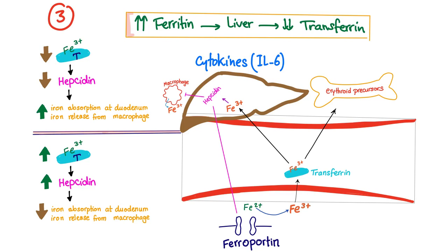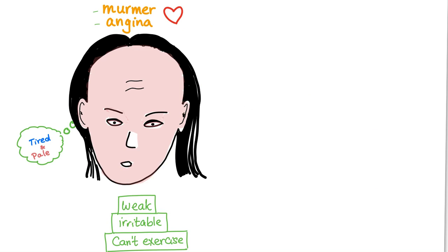That's why we have told you that ferritin and transferrin are always in inverse relation to each other. Ferritin up, transferrin down. Ferritin down, transferrin up. So that's anemia of chronic disease in a nutshell.